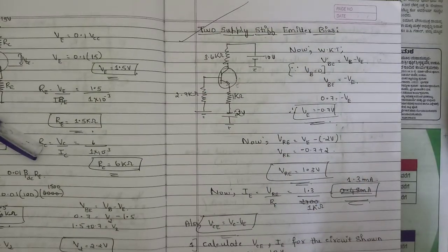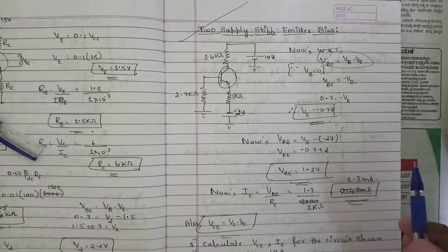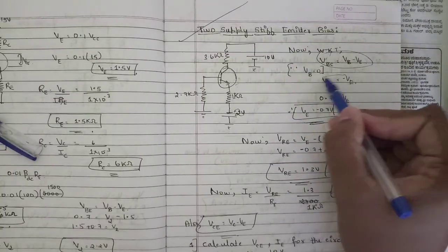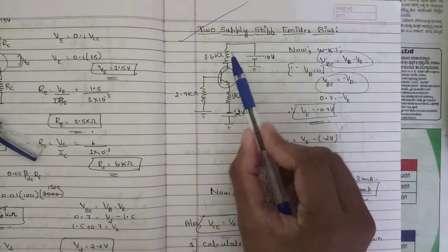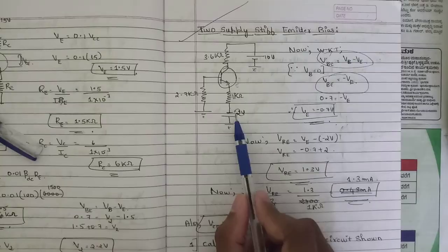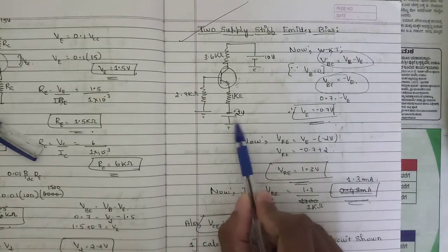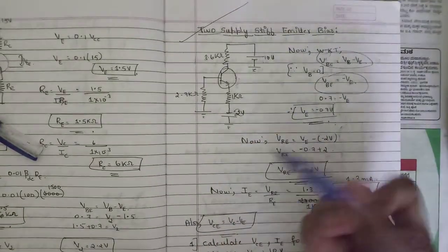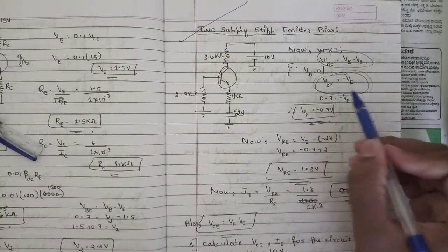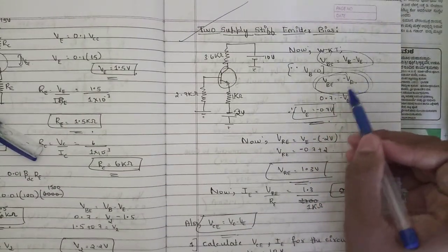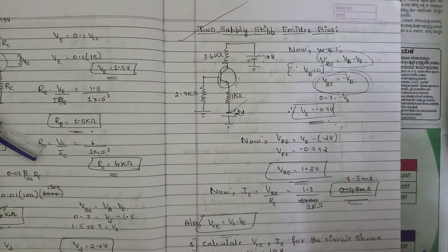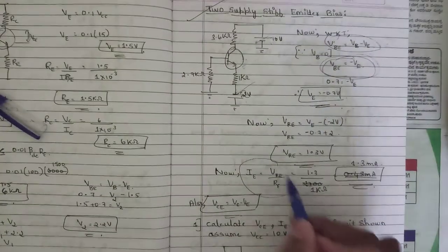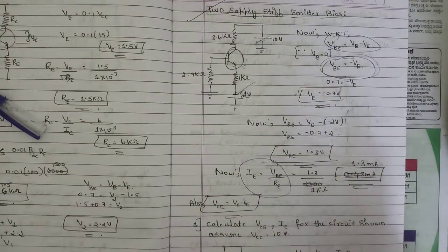For the two-supply stiff emitter bias circuit, VBE = VB minus VE. Since we have two supplies — one towards the emitter side and one towards the collector side — VBE simplifies to minus VE, giving VE = −0.7 V. The formula for IE is VRE / RE. Note this condition for the two-supply stiff emitter bias circuit.